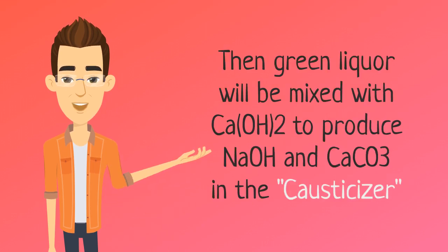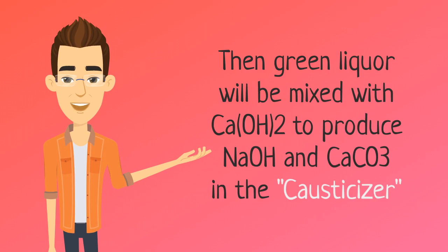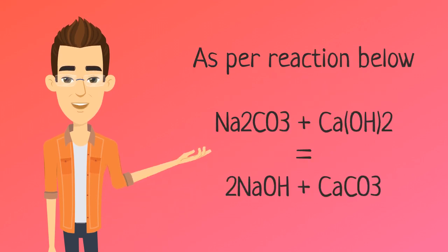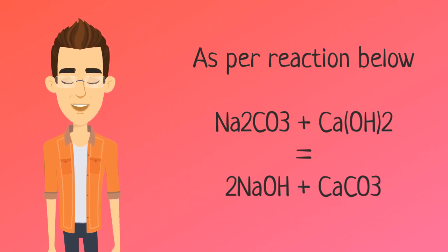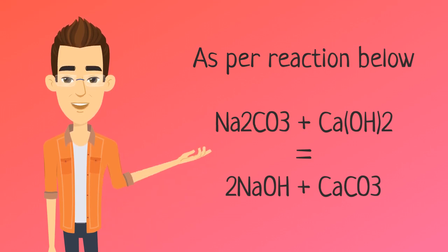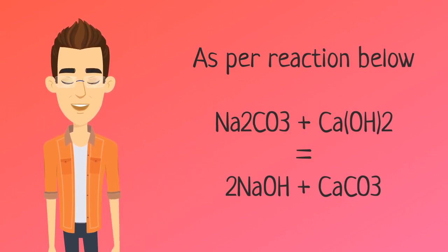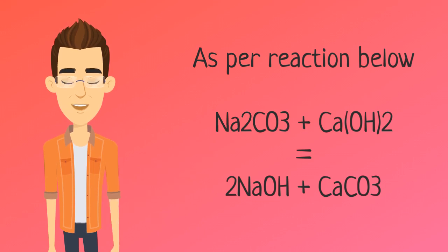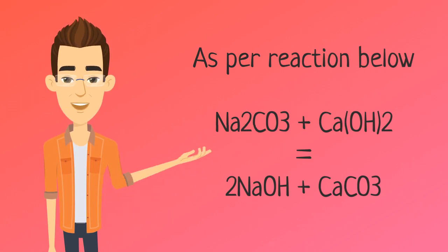Then green liquor is mixed with calcium hydroxide to produce sodium hydroxide and calcium carbonate in the causticizer. As per the reaction below, sodium carbonate reacts with calcium hydroxide to produce two molecules of sodium hydroxide and calcium carbonate.